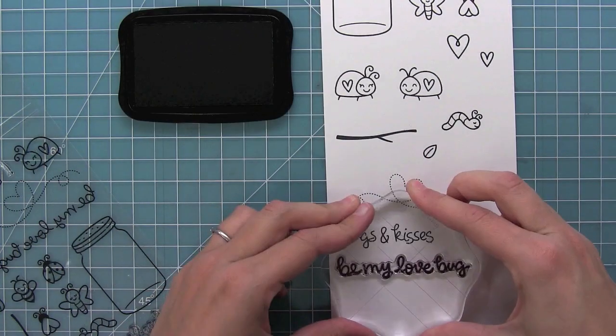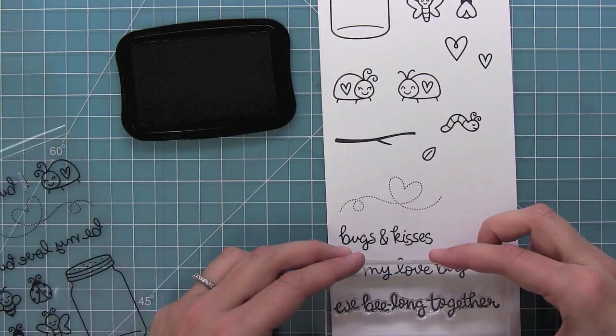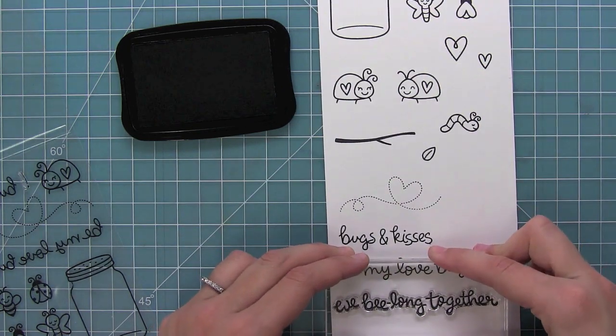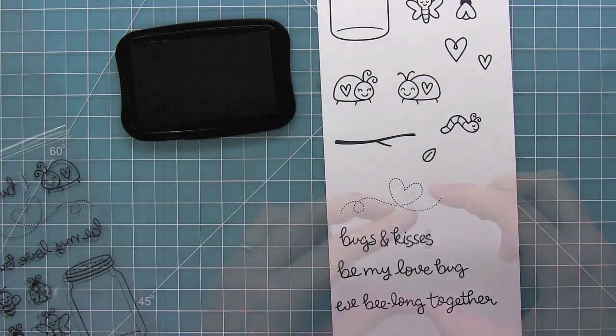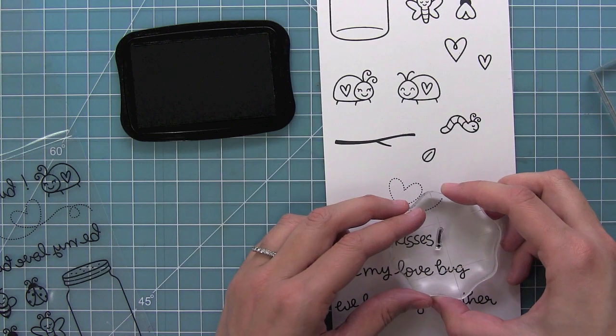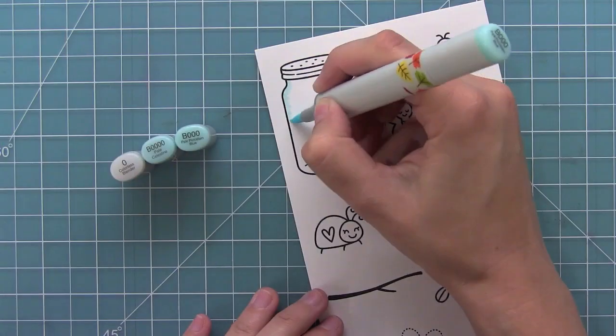We have some fun sentiments: bugs and kisses, be my love bug, and we belong together. And of course last but not least we have our exclamation point to add to the end of any of these phrases.